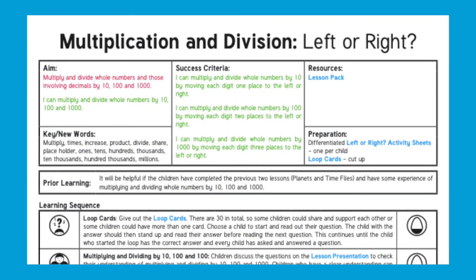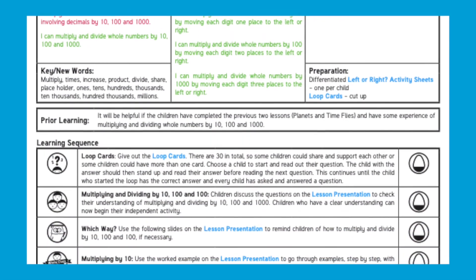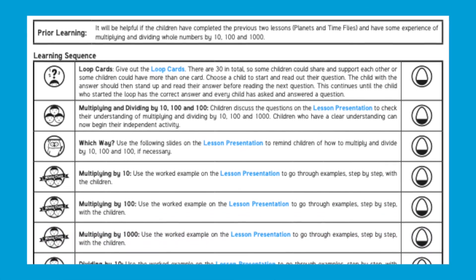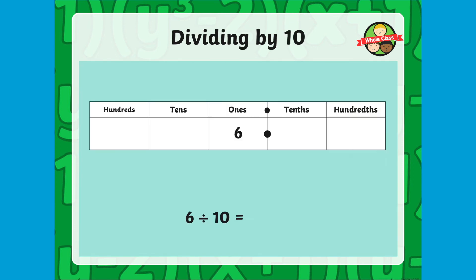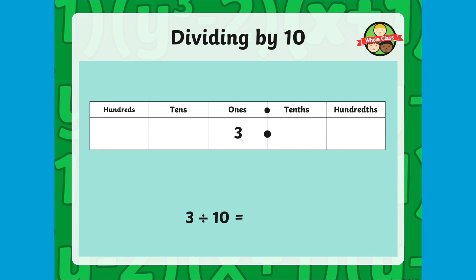Also provided in this pack is the lesson plan, giving you the aim of the lesson, success criteria, and the full learning sequence. Key Stage 2 children also need to be able to multiply and divide decimals as well as whole numbers by 10, 100, and 1000. This PowerPoint uses the same principle of digits moving left or right; however, the digits move into the tenths and hundredths columns, not just using zeros as placeholders.